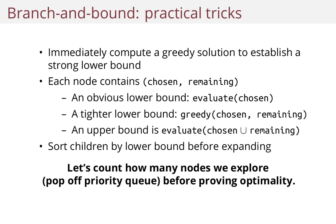Let's talk about some practical tricks and implementation details. Some things that I did: I immediately computed a greedy solution to establish a strong lower bound before doing anything else. Recall that each node contains two lists — one list with chosen Pokemon and one list with remaining Pokemon.